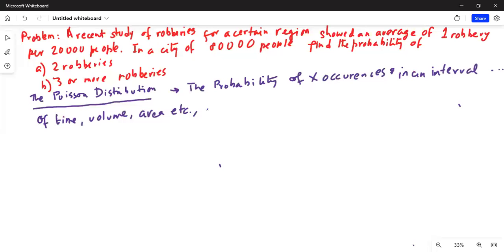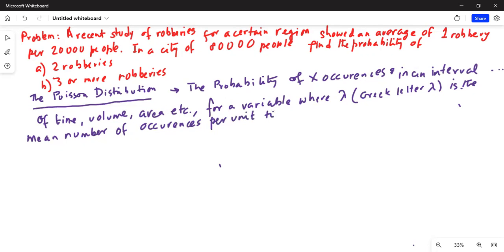For a variable where lambda, lambda is the Greek letter, is the mean number of occurrences per unit time, volume, area, etc.